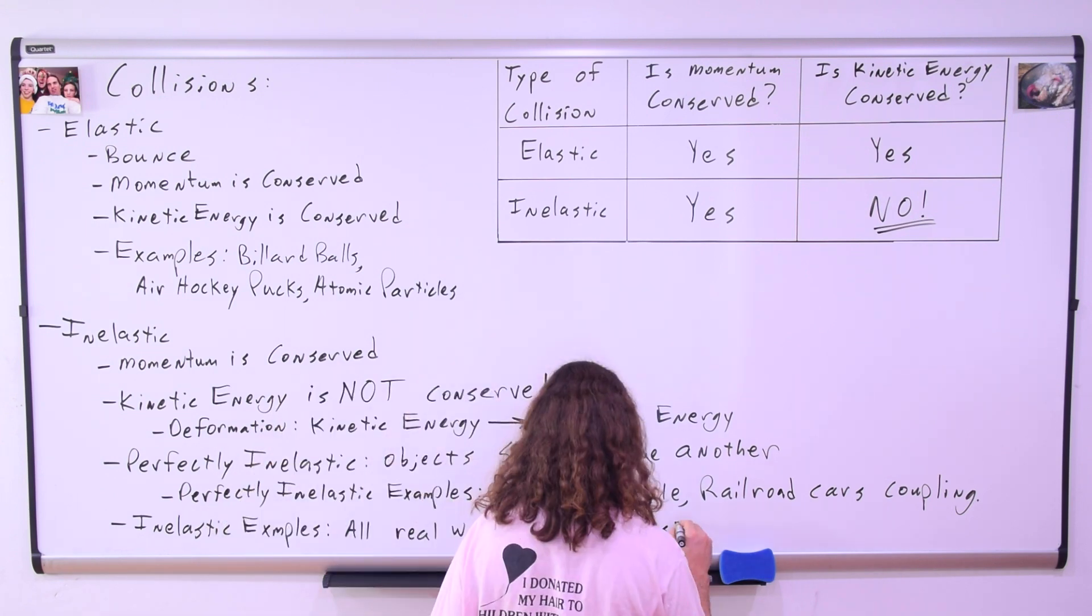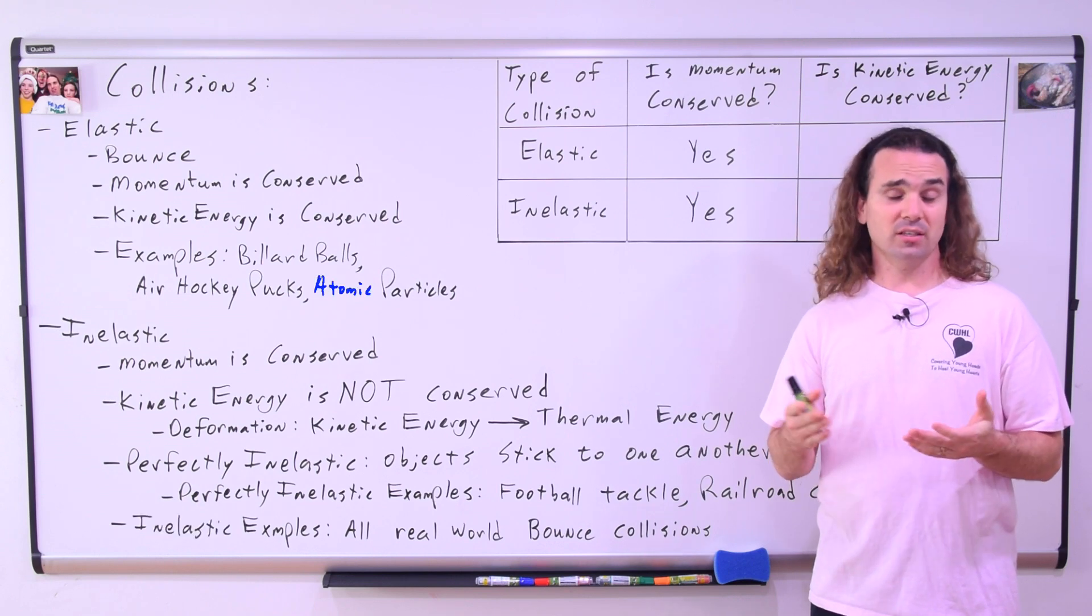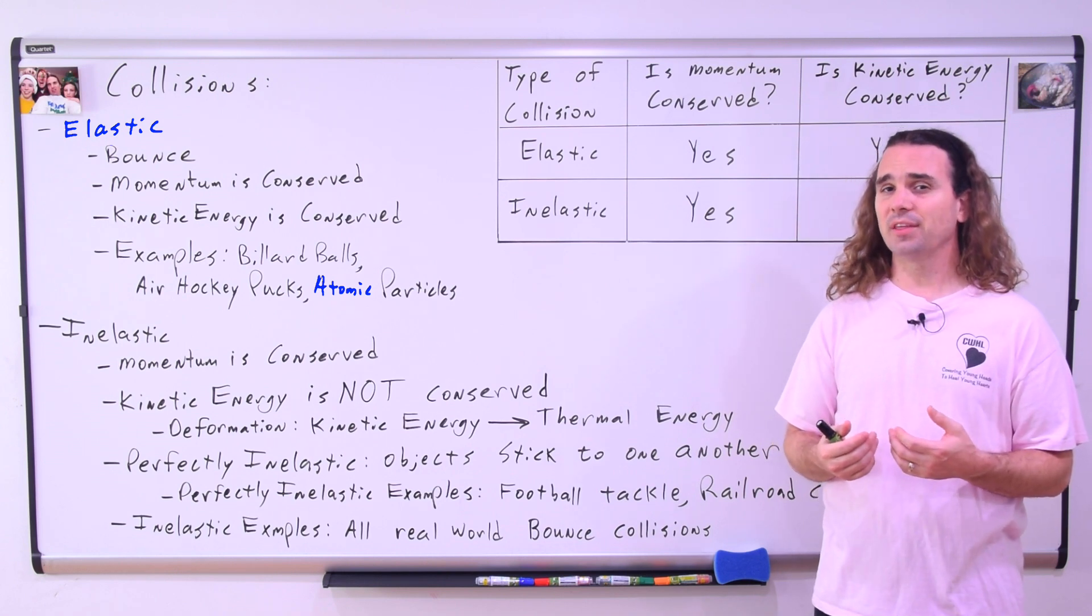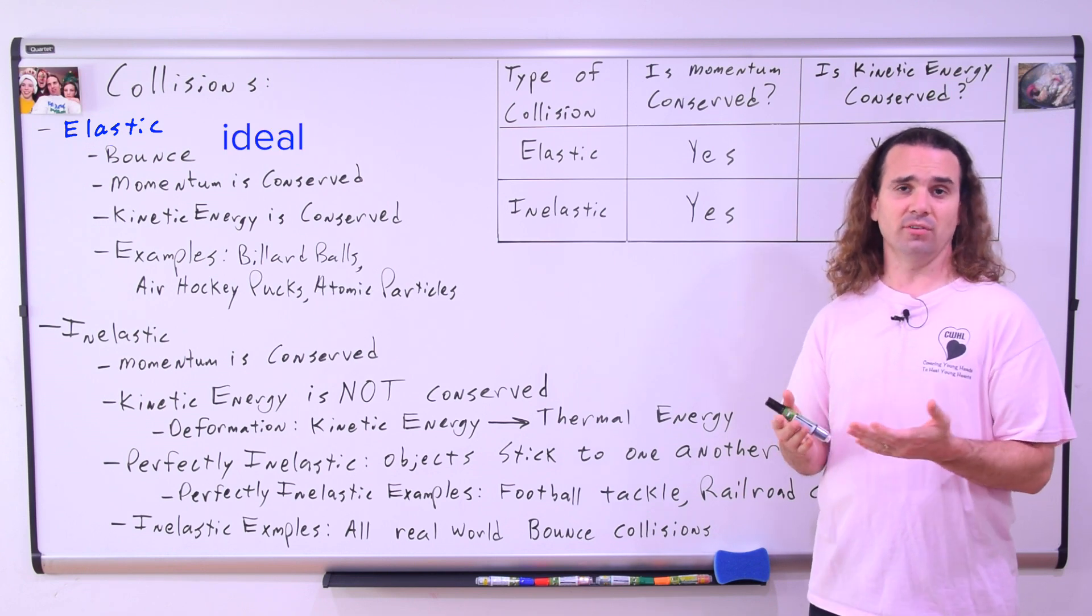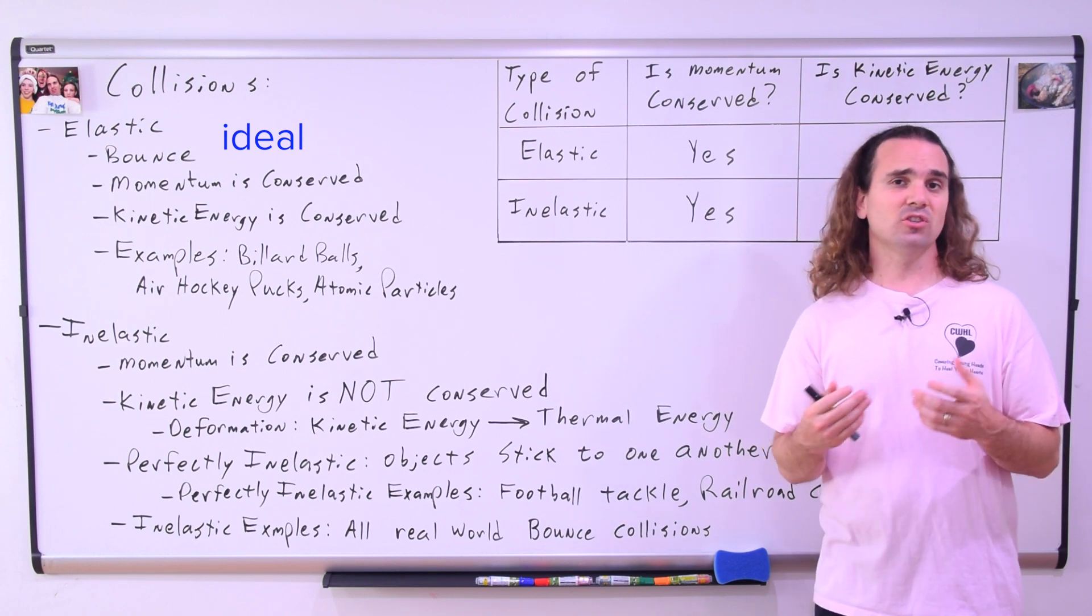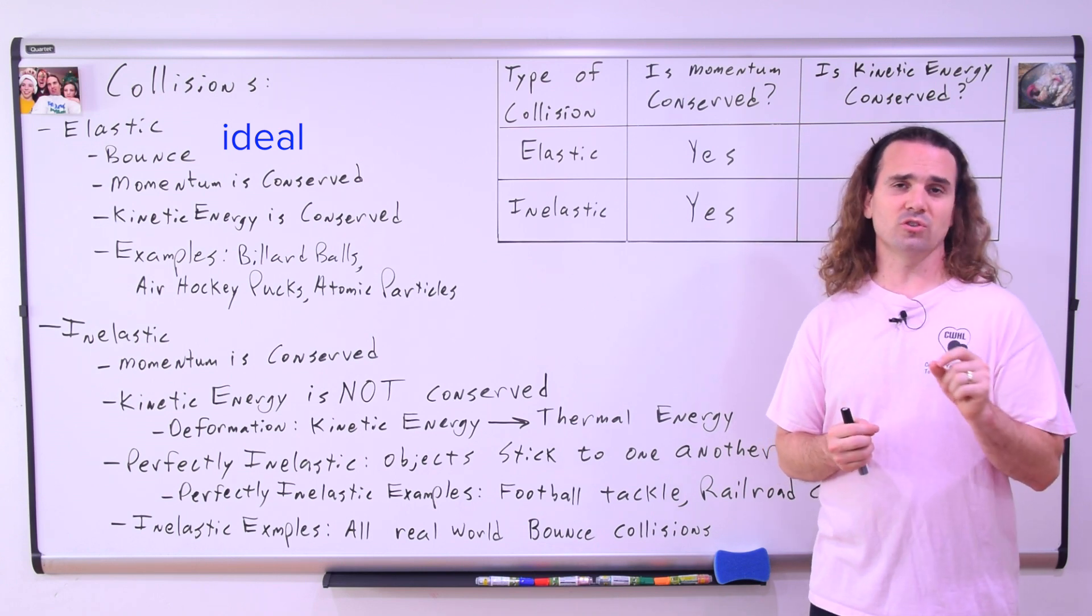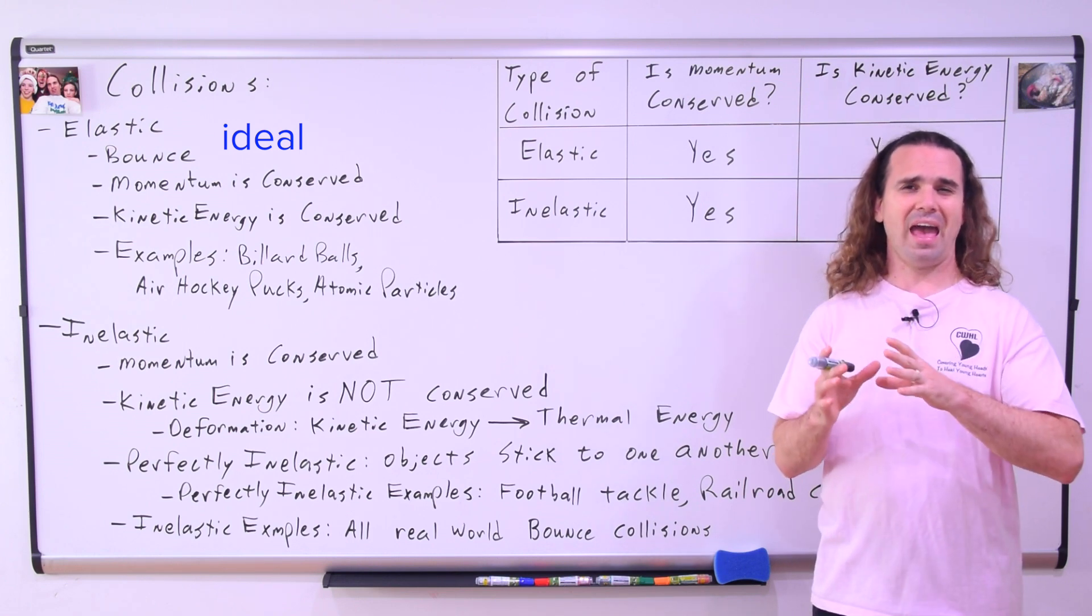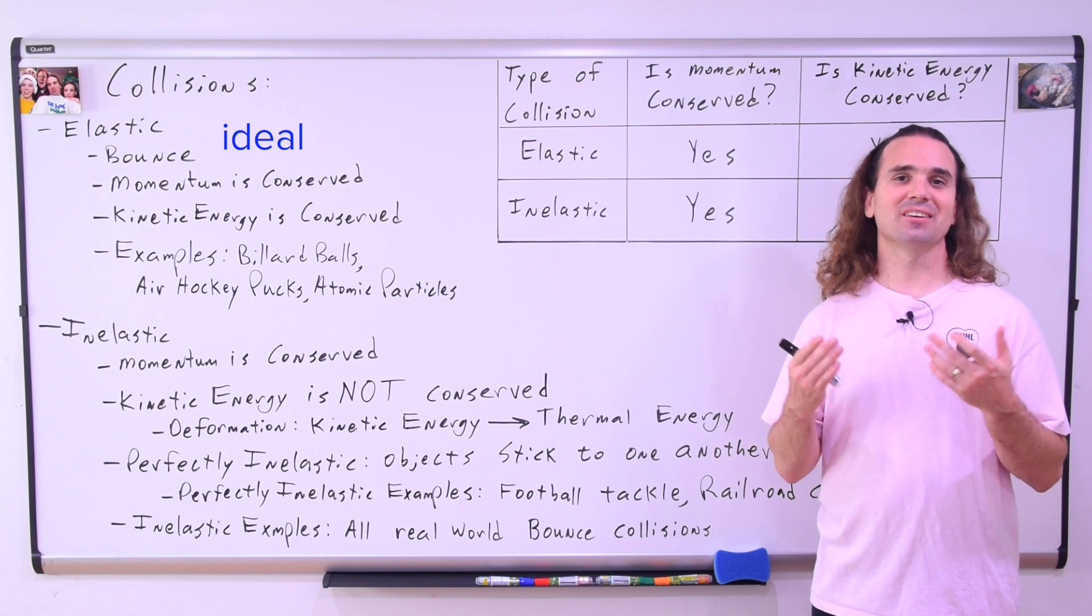All real world bounce collisions are inelastic. On an atomic level, collisions are often elastic. However, in this macroscopic world that we live in, an elastic collision is an ideal case which is never fully achieved. Even billiard balls, when they collide and we consider them to be elastic, there is some deformation of the objects and therefore some kinetic energy converted to thermal energy. But physicists, and we will for the sake of this class, consider billiard balls to have elastic collisions. Thank you very much for learning with me today, I enjoyed learning with you.